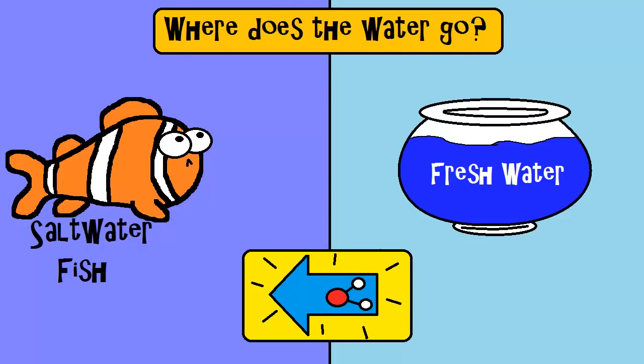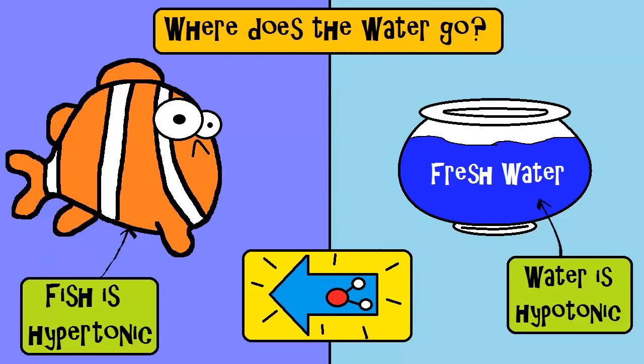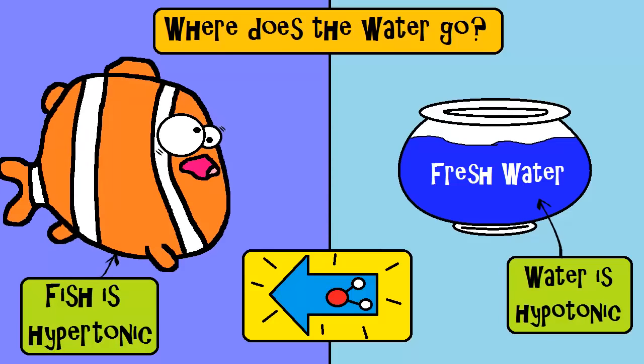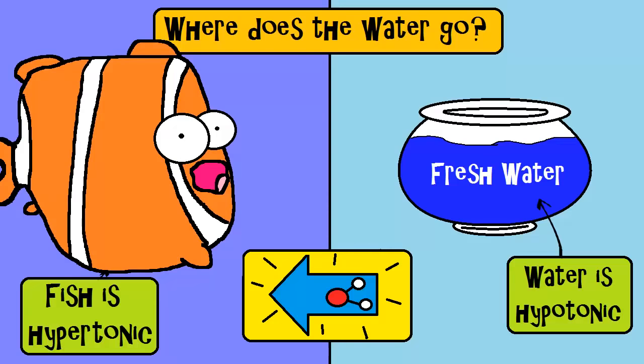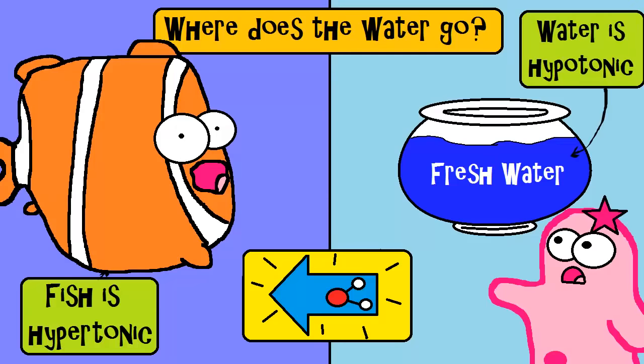Definitely in the saltwater fish cells. So where does the water go? It's going to go to the area where there's a greater solute concentration, the hypertonic side. So it's going to go into that poor fish. If you don't rescue it soon, the cells would actually start swelling if you looked at them under a microscope. Eventually this fish could die.